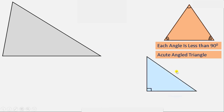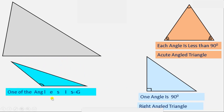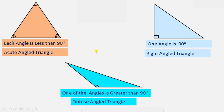If one of the angles is exactly 90 degrees, it is a Right angle triangle. If one of the angles is greater than 90 degrees, it is an Obtuse angle triangle.